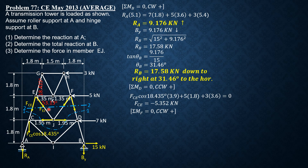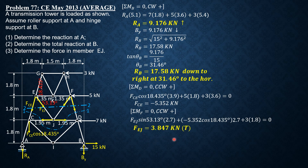Summation of moments about F equals zero, counterclockwise positive: FEJ sine 53.13 times 2.7 plus the vertical component of FCE (negative 5.352 cosine 18.435) times 2.7 plus 3 times 1.8 equals zero. Solving gives FEJ = 3.847 kilonewtons, and since positive it is tension. That's the solution — a bit tedious, but it mainly involves trigonometry and moment arm analysis.